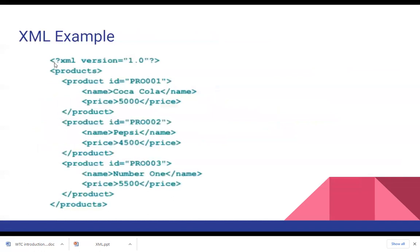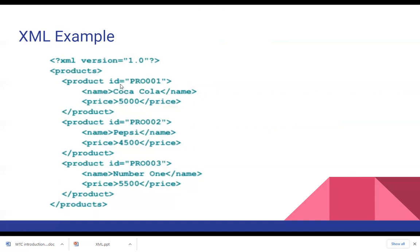Here is an example of XML. It starts with the declaration: <?xml version="1.0"?>. The user-defined parent tag is 'products'. Within it, each 'product' has an attribute id (e.g., pr001, pr002, pr003) and child tags for name and price. In this way, XML carries data about products with their ID, name, and price.